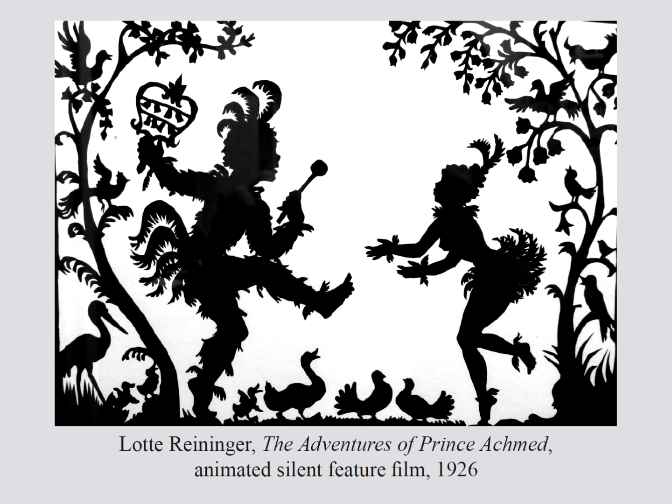As cartoons were developing in the commercial film industry, animation was also being used by more avant-garde artists. One of the greatest examples of early animated film is The Adventures of Prince Achmed by Lotte Reininger — a feature-length film created in 1926 using only cut-out silhouettes. This is the earliest surviving animated feature film, available on DVD and required viewing for all students of animation.